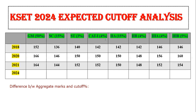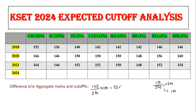Usually, both paper one and paper two consist of 300 marks — that is 200 marks for the subject paper and 100 marks for the general paper. For example, if out of 300 your score is 150, then 150 divided by 300 multiplied by 100 gives 50 percentage. So this 50% is the cutoff percentage, and 150 is the scored marks or cutoff marks.